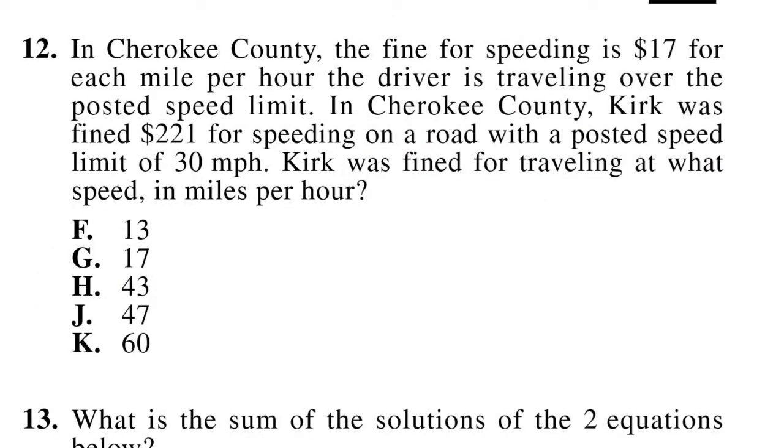In Cherokee County, the fine for speeding is $17 for each mile per hour the driver is traveling over the posted speed limit. In Cherokee County Kirk was fined $221 for speeding on a road with a posted speed limit of 30 miles per hour. Kirk was fined for traveling at what speed in miles per hour? So for this one we know that the speed limit is 30 but right now that's not the most important thing. We know that he was fined a total of $221 and we also know that the fine for speeding is $17 for each mile per hour the driver's traveling over the speed limit. So if we figure out $221, what's that divided by 17?